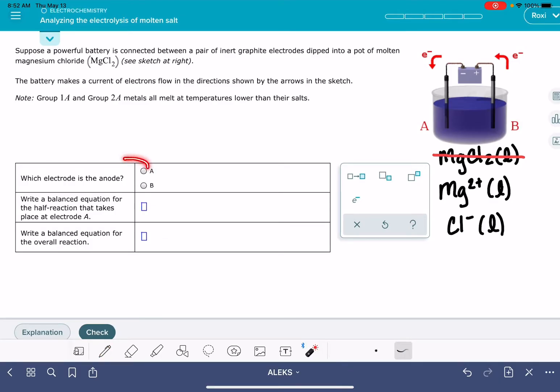There's going to be three questions that we have to answer about this voltaic cell. The first question is asking us which electrode is the anode. Our trick, RedCat, helps us remember that the reduction is taking place at the cathode, which means the anode is the site of oxidation.